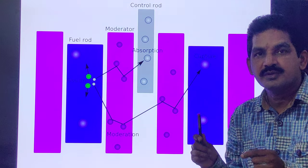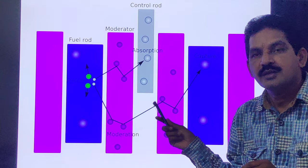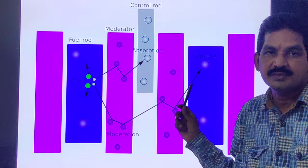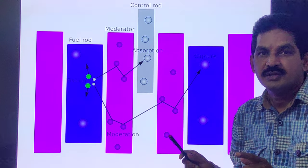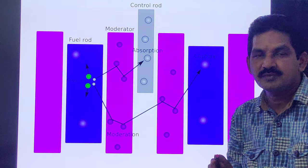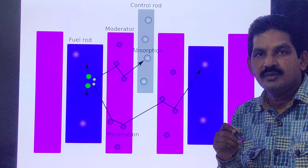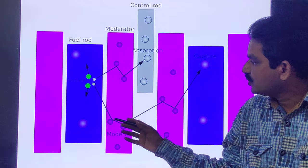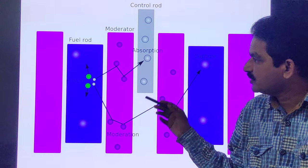This is done by making these neutrons collide with lighter nuclei of other materials, which do not absorb these neutrons but simply scatter them. Each collision causes loss of energy and the speed of the neutrons is reduced. Such material is called a moderator. The neutrons that slow down are easily captured by the fuel element.